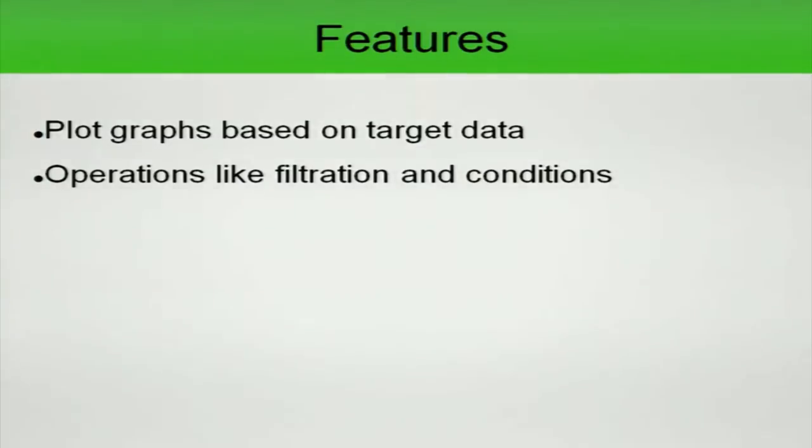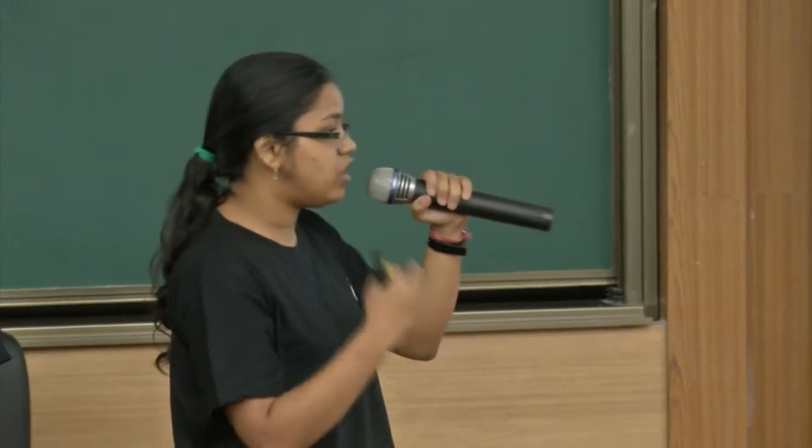Our tool plots graphs based on the target data. By target data, I mean if you are a teacher and you want to plot a graph between two parameters — for example, student names on the x-axis and marks of a particular subject on the y-axis — without any manual effort, you just need to select the particular columns from our user interface, and the corresponding graph will be shown for the selected graph type.